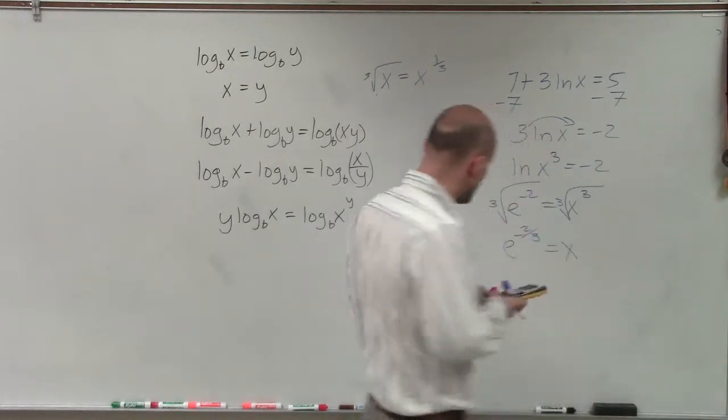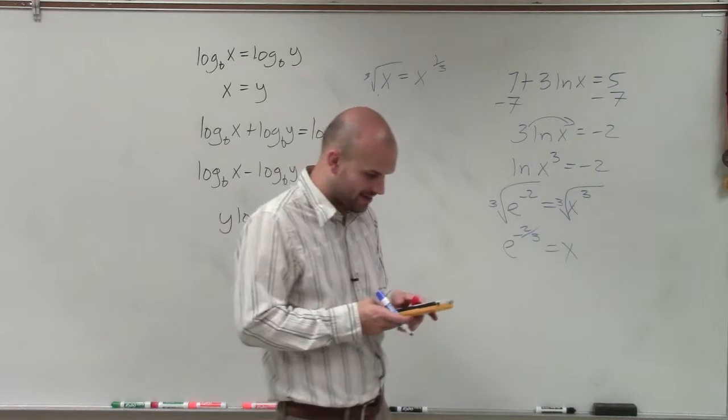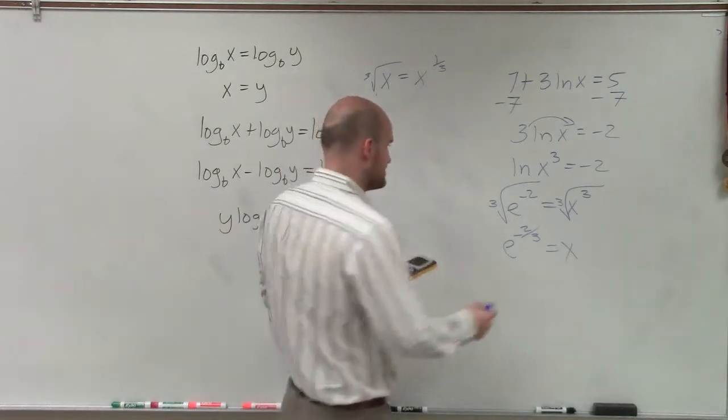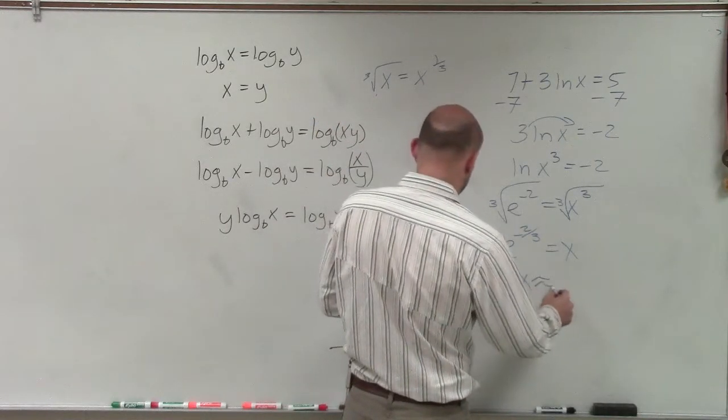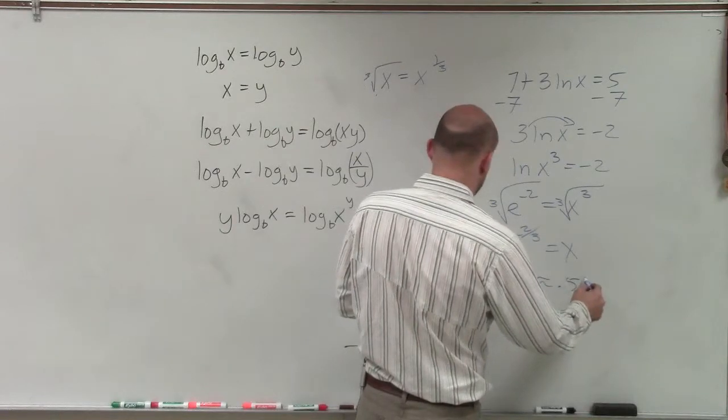So therefore, now I have e raised to the negative 2 divided by 3 power. And that's going to be now x is approximately 0.51.